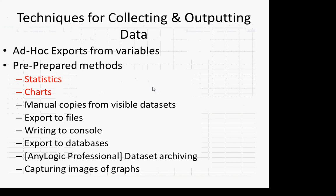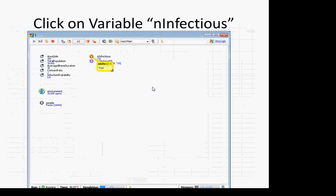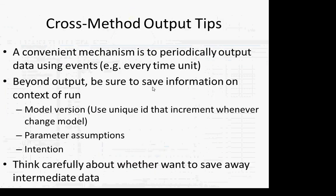We're now going to talk about pre-prepared methods. These are the ones to which I was orienting the cross-method tips: this issue of saving away metadata and needing to periodically record data. For these pre-planned methods, you're going to have to be thinking ahead of time about what you're recording, how frequently you're recording it, how frequently you're sampling from the model, and what particular values you're sampling.